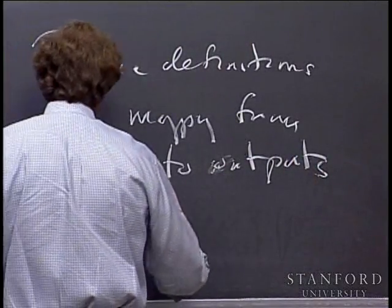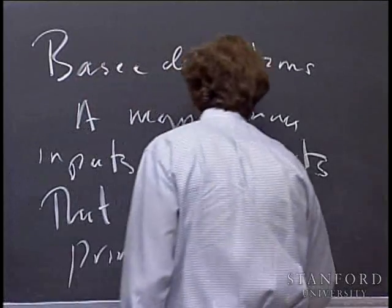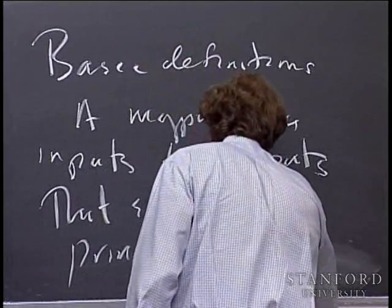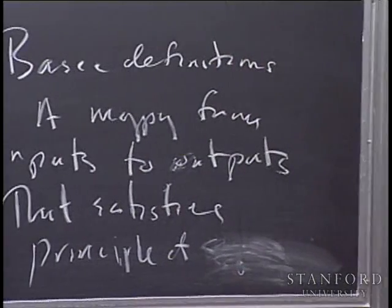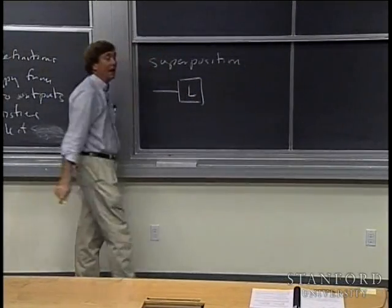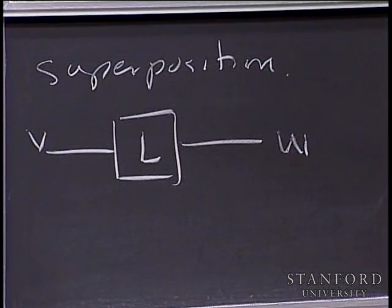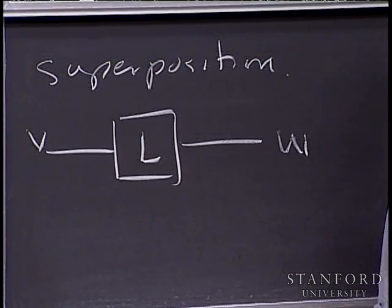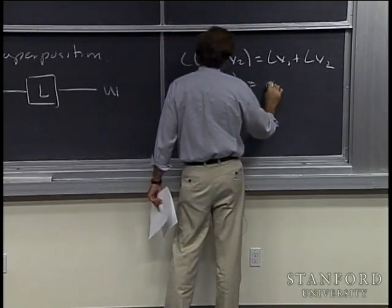A linear system satisfies the principle of superposition. You think of the linear system L as a black box: it takes an input V to an output W. To say that it satisfies superposition means that if you add inputs, the outputs also add; if you scale the inputs, the outputs also scale. So L of (V1 + V2) is L(V1) + L(V2), and L of (alpha times V) is alpha times L(V).